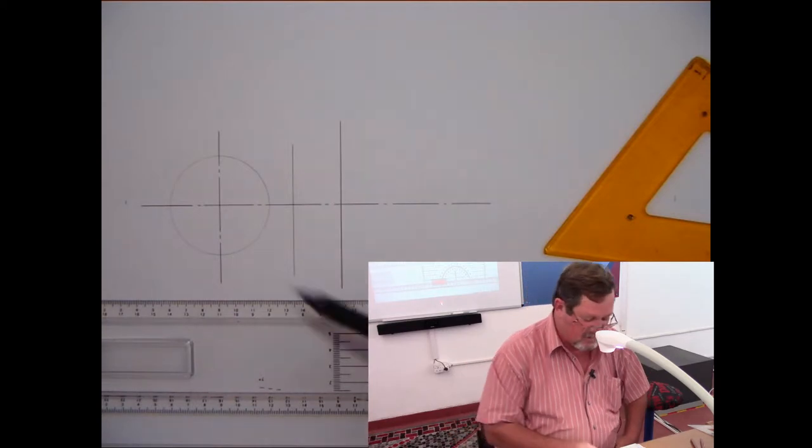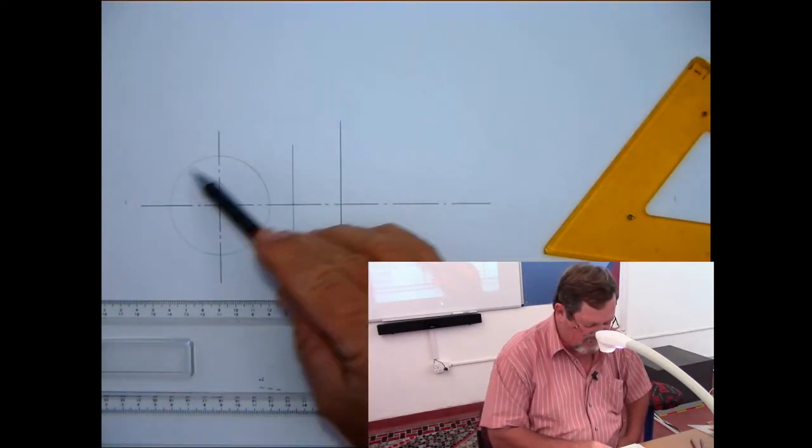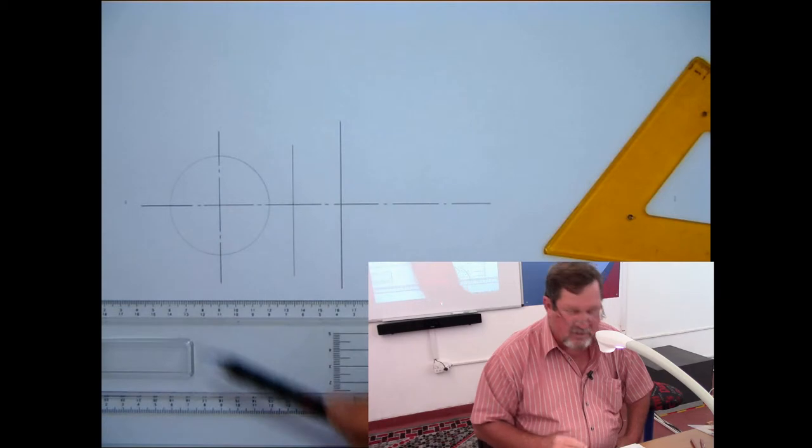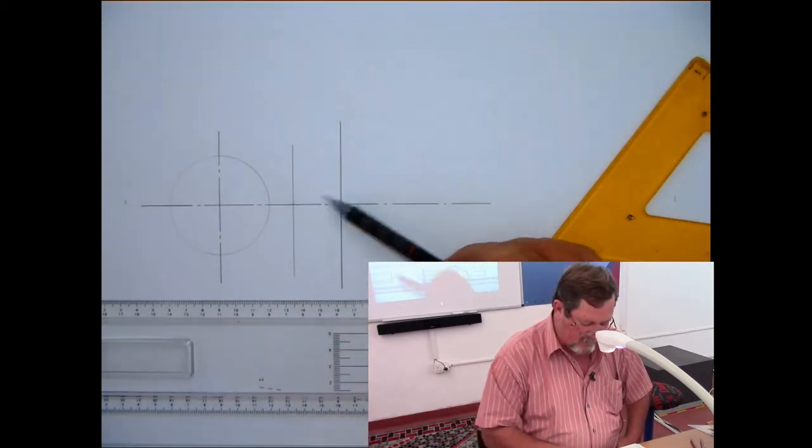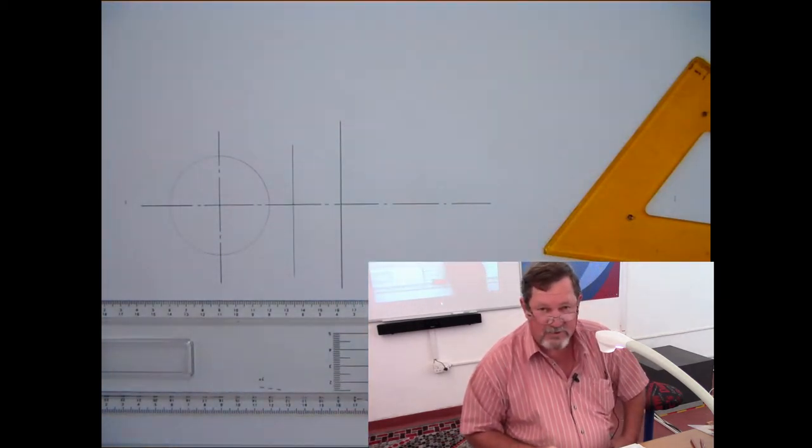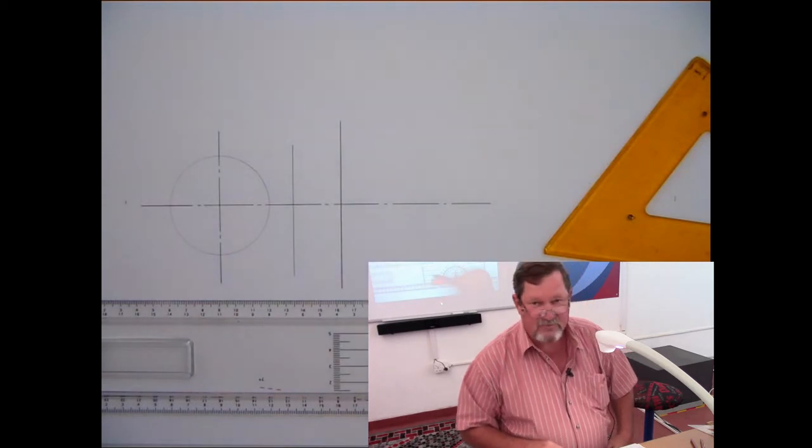What I've done here is I've already got the center lines. I've already done my calculation with the diameter and I've already put the thickness of the bolt in, so we're only going to do the two surface construction.